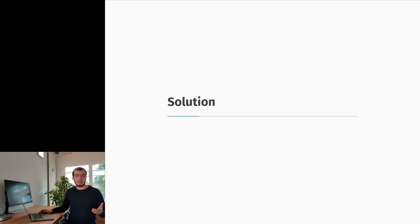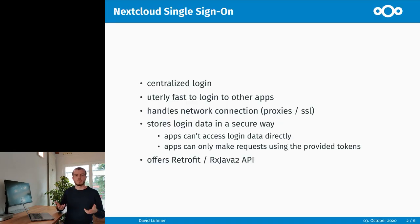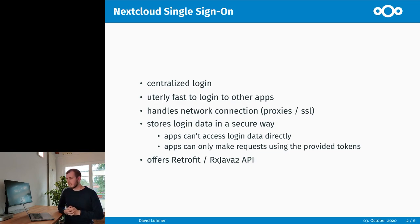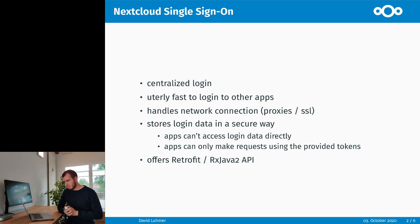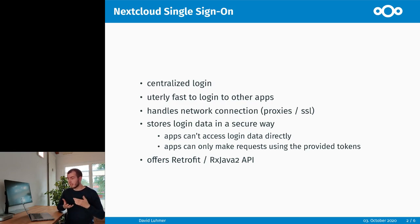The solution we came up with is the Single Sign-On system, which is a centralized login method. For users it's easy to log in to all Nextcloud apps — it's a matter of three taps, as I'll show you in a second. It also handles network connections for you, so as a developer you don't need to worry about implementing login mechanisms or self-signed certificate support. The Single Sign-On system also stores login data securely, so apps don't have direct access to your login data and can only make requests to your Nextcloud server using a token received from the Single Sign-On system.